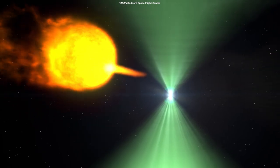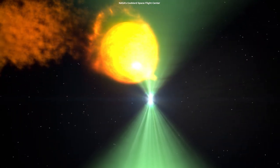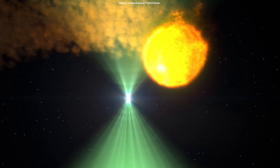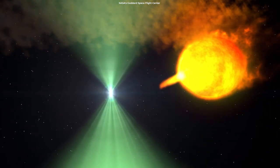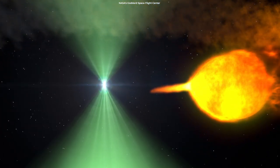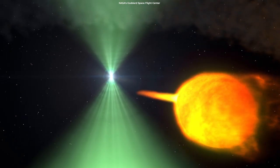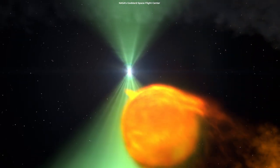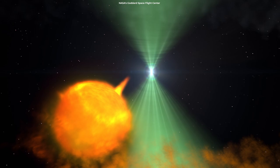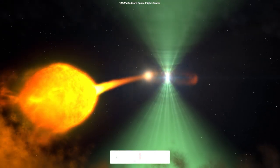Binary pulsars form when a neutron star forms in a binary system. If the system remains bound after the supernova explosion, a normal pulsar in an eccentric orbit around a main-sequence star, the secondary, exists for a short period.